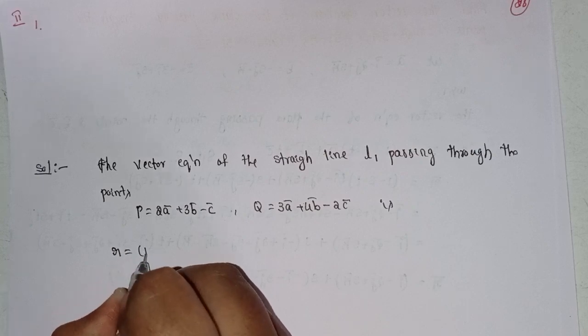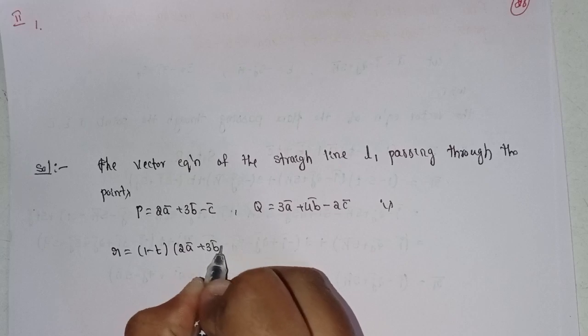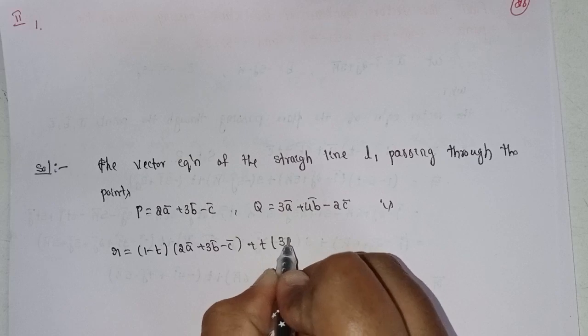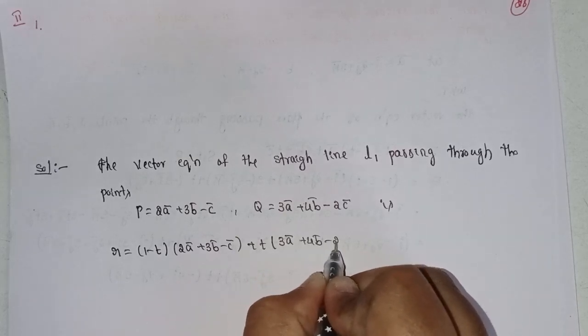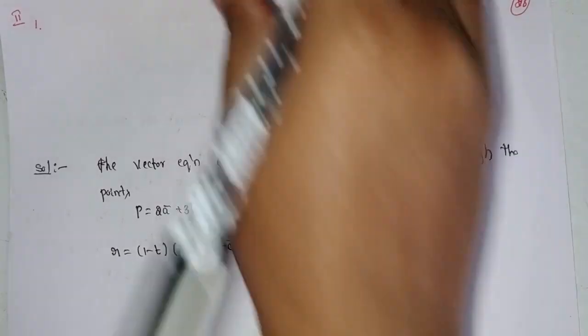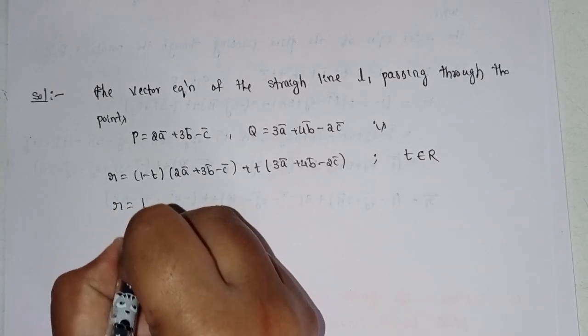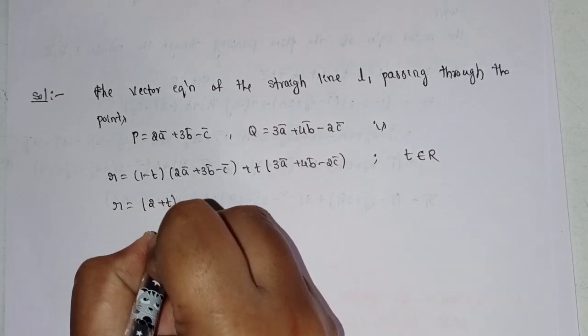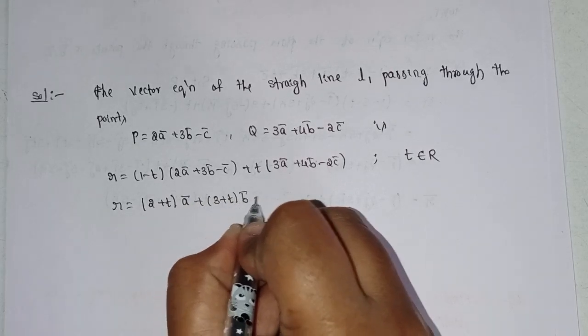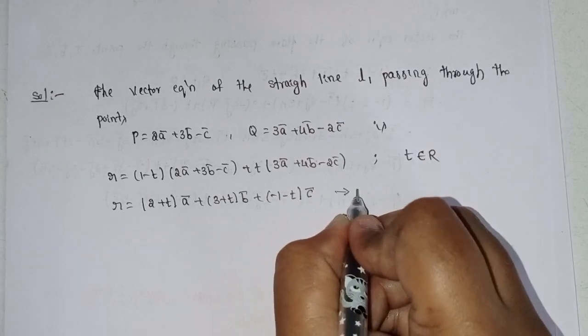r equal to (1 minus t) into (2a plus 3b minus c) plus t into (3a plus 4b minus 2c), where t is real. Expanding this, we get r equal to (2 plus t)a plus (3 plus t)b minus (1 plus t)c. This is equation 1.